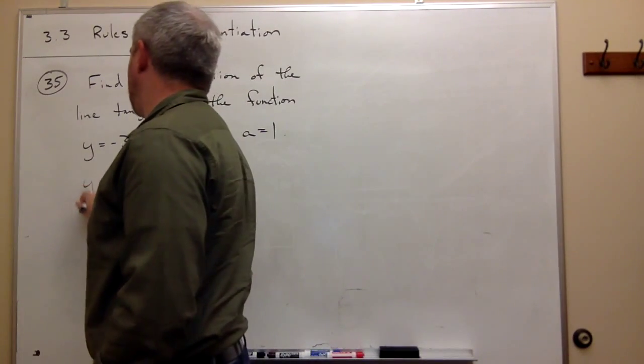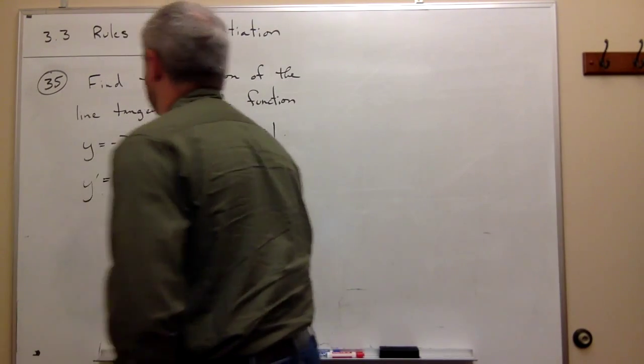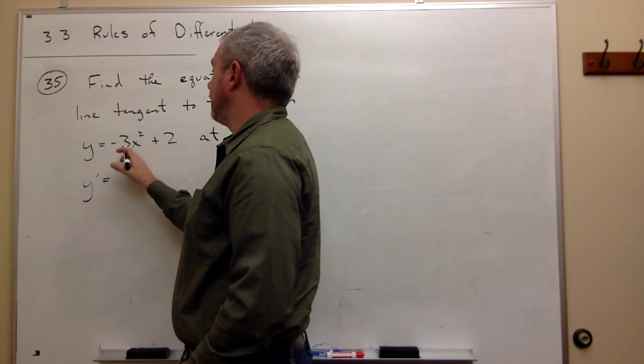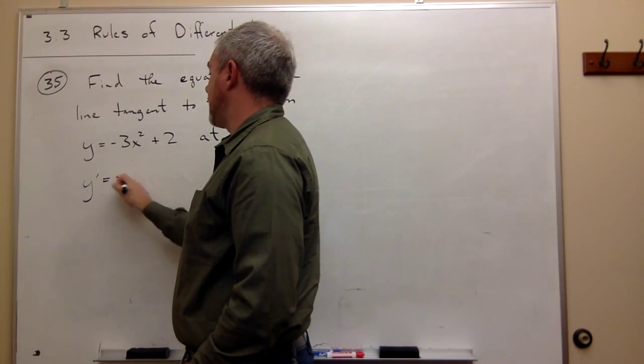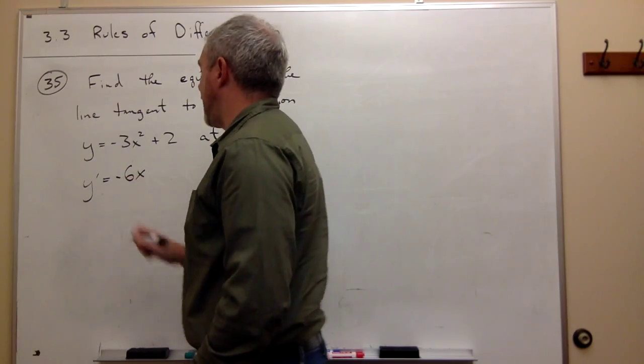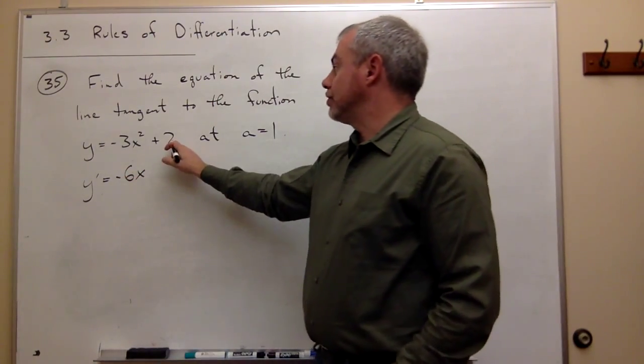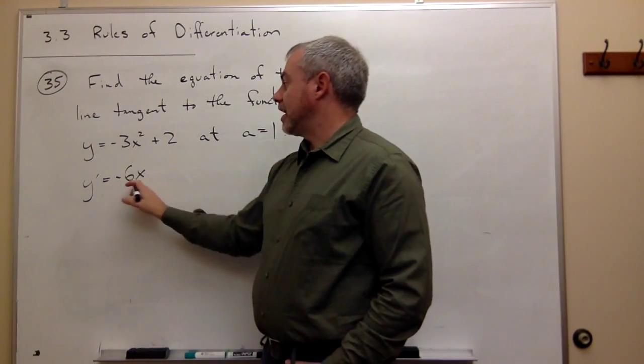We get that y prime equals—the derivative of negative 3x squared is negative 6x using the power rule, and the derivative of 2 is 0—so I just get negative 6x.